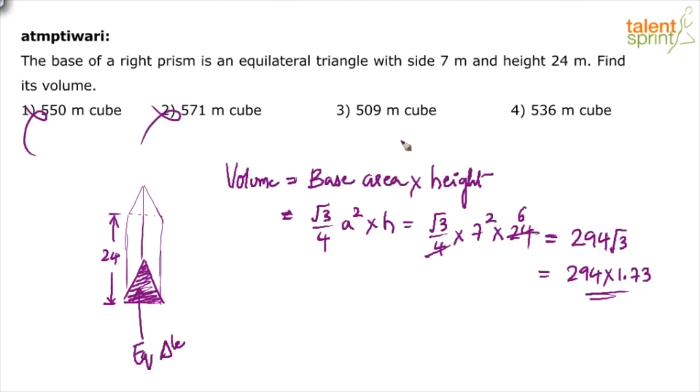So I will go by elimination. I do not know whether 509 is correct or not, but I am sure 550, 571, 536 are far away. It is just an approximate calculation. So 509 meter cube is the answer, which is option 3. Alright?